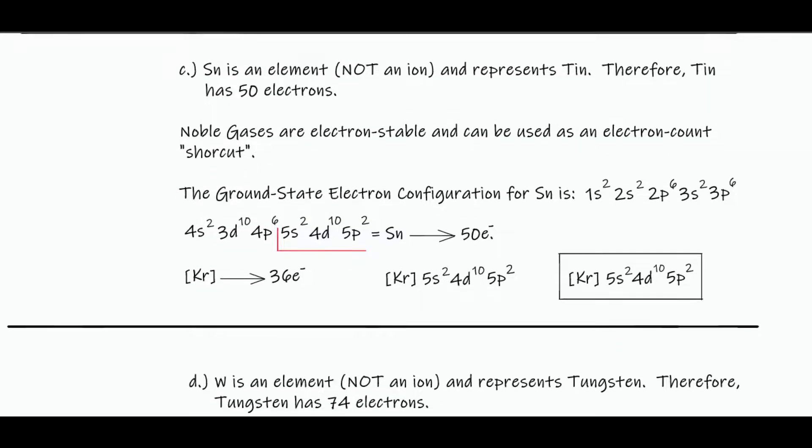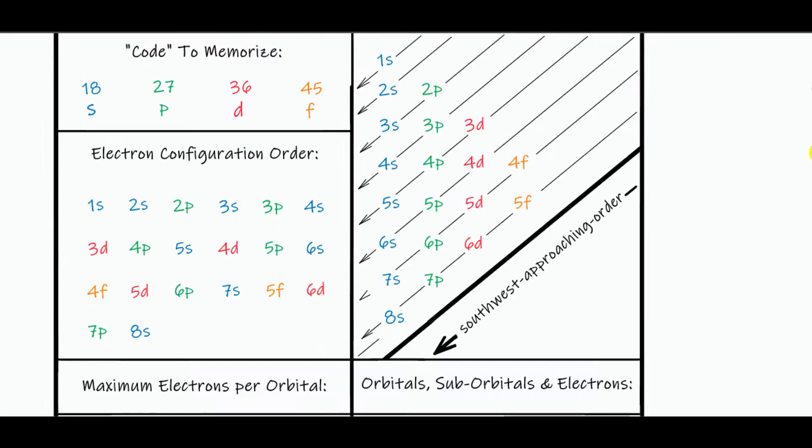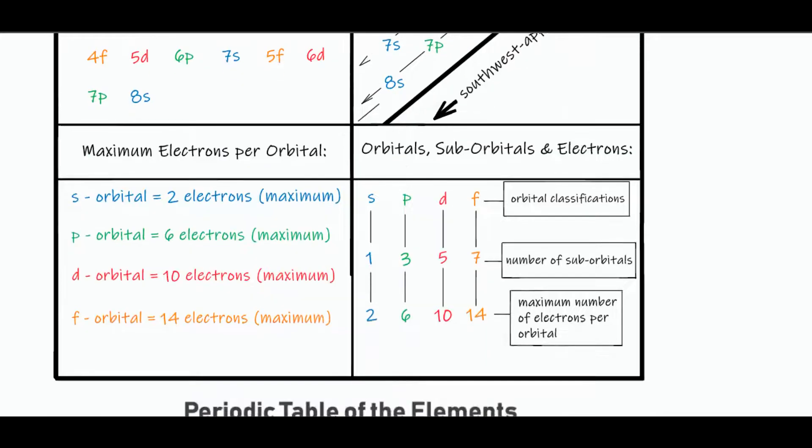Okay, now we have element, tin. This one has 50 electrons. And so remember, we're going by this configuration order. And then each orbital has a maximum number of electrons. And I stress maximum, so you can enter less than the maximum. That is permissible as well.